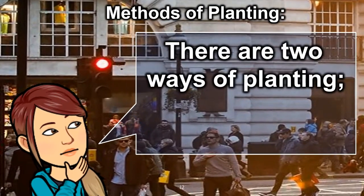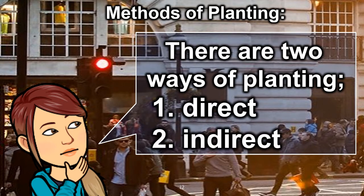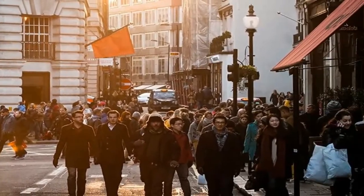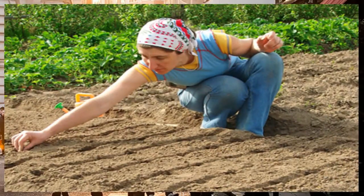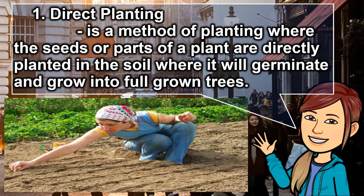There are two ways of planting: one direct and one indirect. Direct planting is a method of planting where the seeds or parts of a plant are directly planted in the soil where they will germinate and grow into full-grown trees.